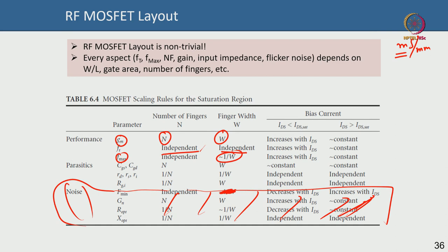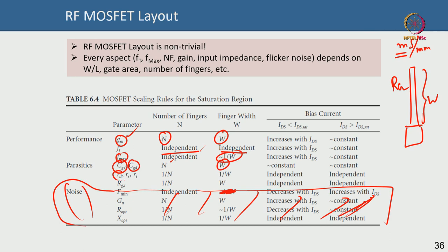fmax definitely depends on W: with larger gate width, fmax is lower because gate resistance is higher. Parasitic CGS and CGD also increase with W since gm increases, but gm/CGS is approximately constant (related to velocity). Parasitic resistances like source and drain resistance decrease as 1/W and 1/N. Gate resistance scales with W and goes as 1/N with number of fingers.